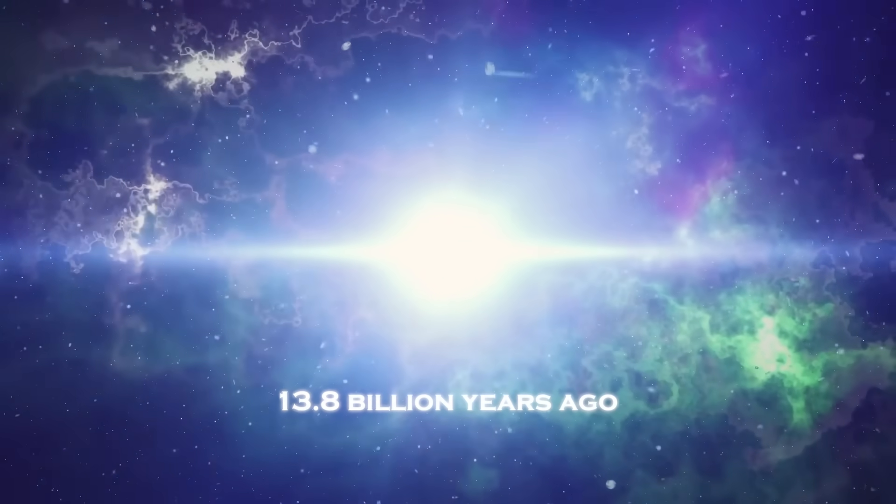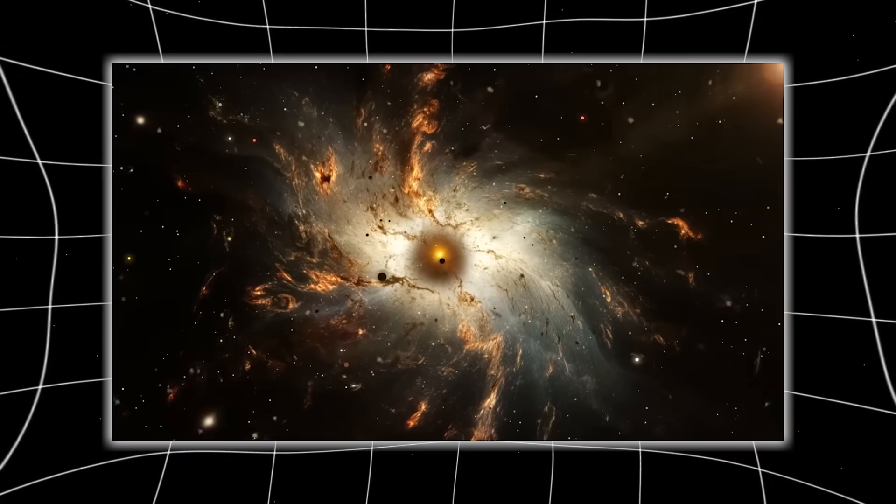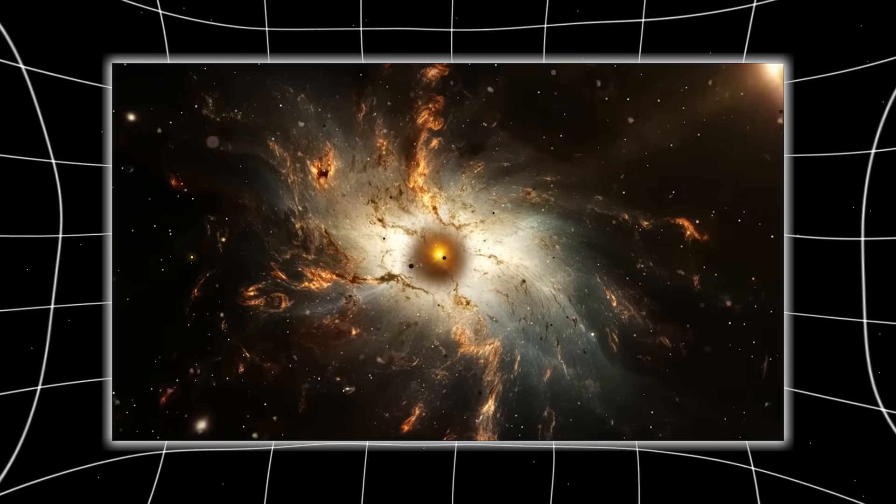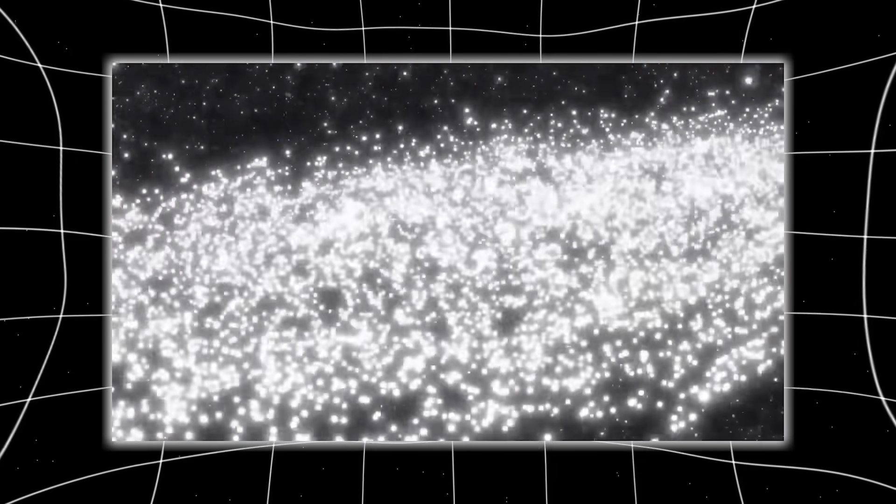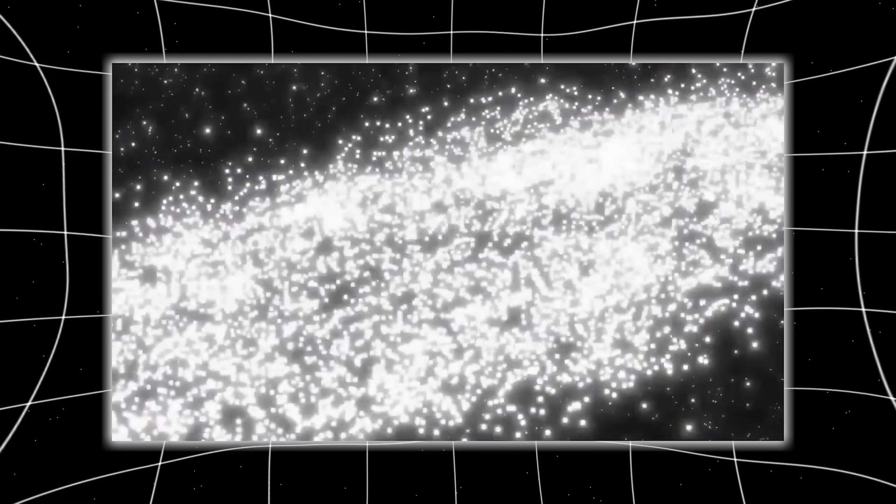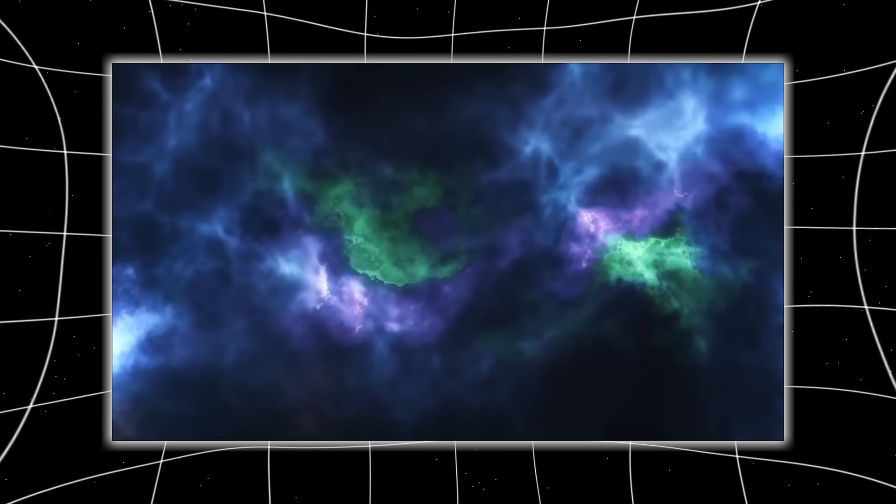The Big Bang model argues that the universe began in a hot, dense state 13.8 billion years ago. But if the earliest galaxies look too old, too massive, too evolved at 200 to 300 million years, then the early universe was not a blank slate waiting to form structure. It was already structured.